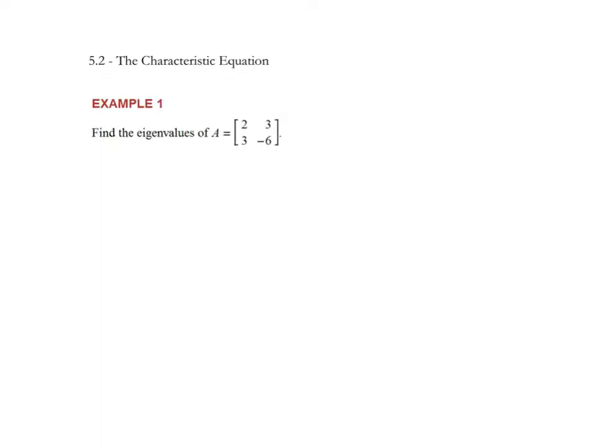Hi everyone. In this video we're going to go through section 5.2, the characteristic equation. We'll start right off the bat with an example where we have to find eigenvalues. In the previous section we were introduced to what is an eigenvalue, what is an eigenvector, how we verify and define them. The next step is to understand how to find an eigenvalue — in some cases it's not terrible, in others it gets fairly complicated. Now we want to find eigenvalues for various matrices.